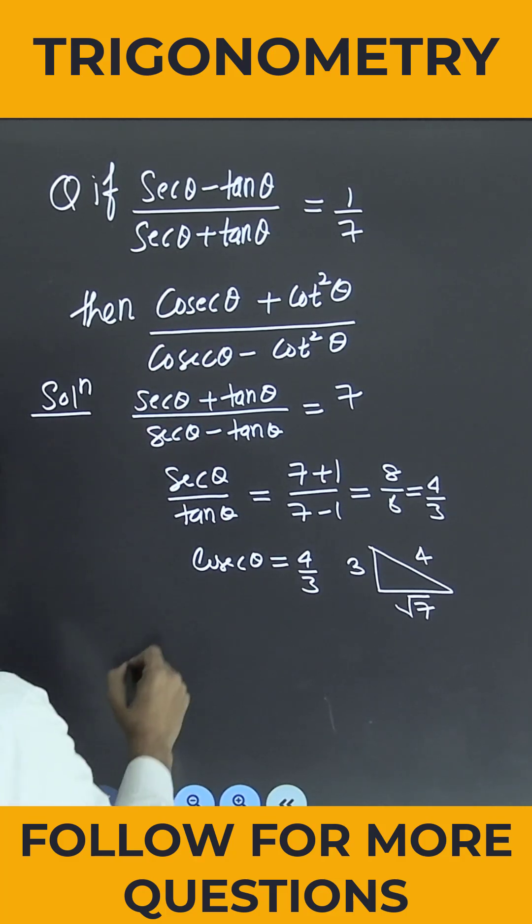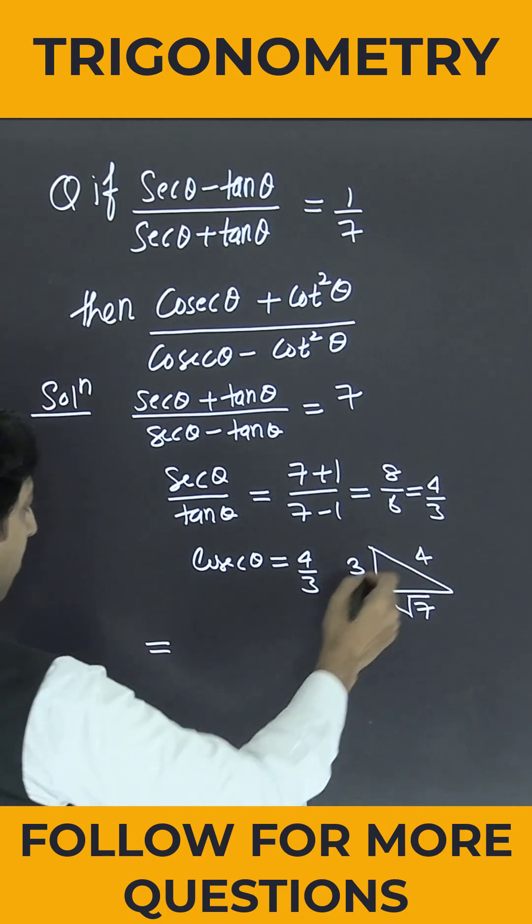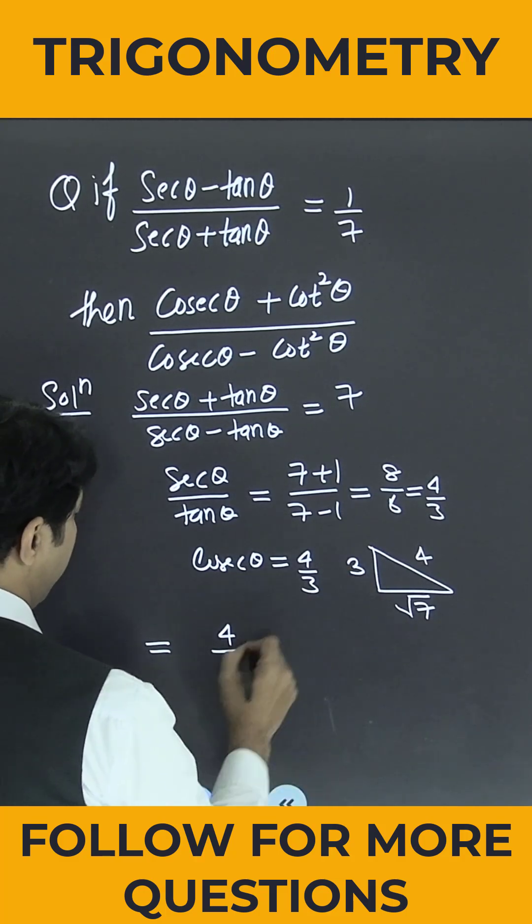Now directly put the value here. So you know very well cosec θ is nothing but hypotenuse divided by perpendicular. Hypotenuse is 4 divided by perpendicular is 3.